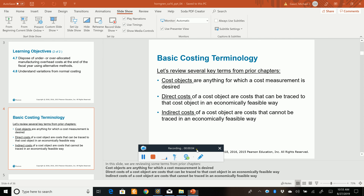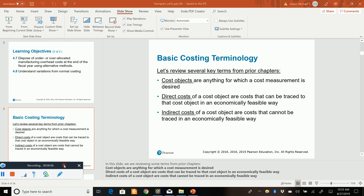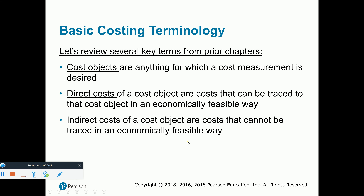Hello, everyone. In this recording, we are going to discuss what is known as job costing. When we actually assign costs to our manufacturing process — materials, labor, and overhead costs — when we're on a manufacturing line and we're assigning these costs to our inventory, there are a couple of ways to do that, and it really depends on the type of process. In this chapter, it's called job costing.